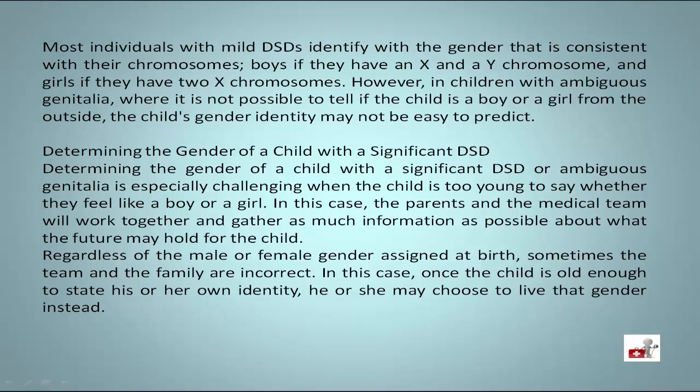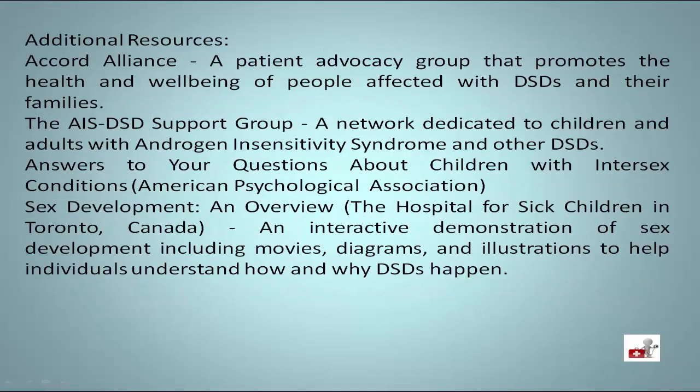However, in children with ambiguous genitalia, where it is not possible to tell if the child is a boy or a girl from the outside, the child's gender identity may not be easy to predict. Determining the gender of a child with a significant DSD or ambiguous genitalia is especially challenging when the child is too young to say whether they feel like a boy or a girl. In this case, the parents and the medical team will work together and gather as much information as possible about what the future may hold for the child. Regardless of the male or female gender assigned at birth, sometimes the team and the family are incorrect. Once the child is old enough to state his or her own identity, he or she may choose to live that gender.